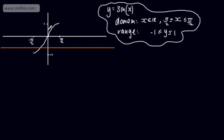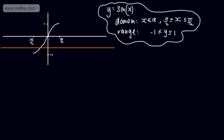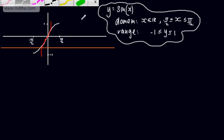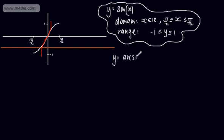We've seen before that the inverse function, if the axes are of equal scale, will be a reflection in the line y equals x. So the inverse function will look something like this — a rough sketch for now. So this is going to be the inverse sine, or arc sine of x. We can write y equals arcsin x.